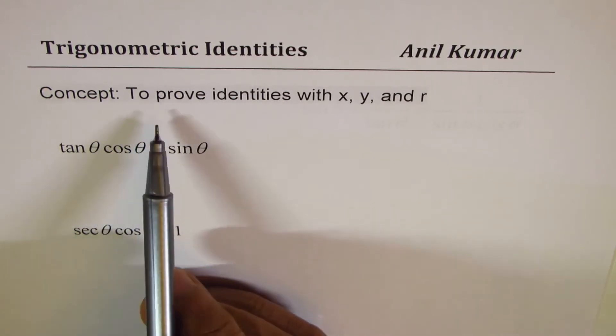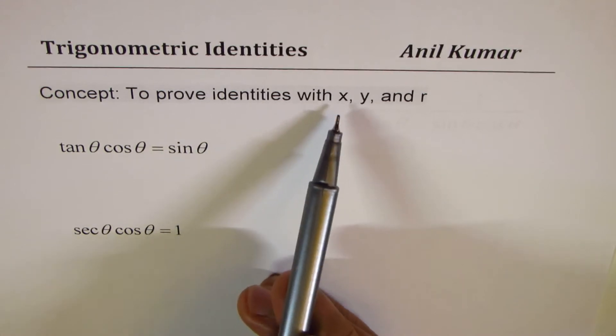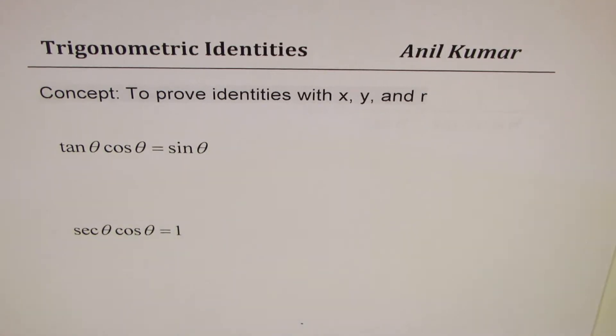So the concept here is to prove trigonometric identities using x, y, and r. Now, what do I mean? Let me explain you this concept.